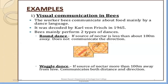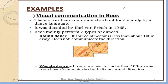There are examples of visual communication in honeybees. There are two types of main dances: round dance and waggle dance. If the source of nectar is less than about 100 meters, the bees perform a round dance. If the source of nectar is more than 100 meters, then they perform a waggle dance. These are two types of examples of visual communication.